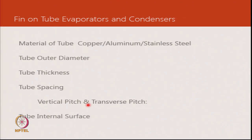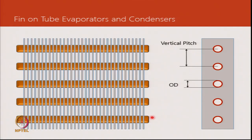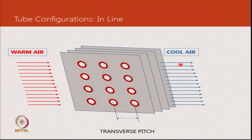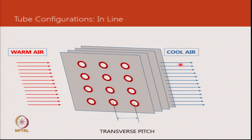In a fin-on-tube heat exchanger, the copper-coloured elements are the tubes and the grey elements are the fins. The variables to define include the number of tubes, the OD of the tube, and the vertical pitch of the tubes. In an evaporator, warm air contacts the cold fin and tube surfaces and leaves at around 12°C with relative humidity in the region of 95% due to condensation.